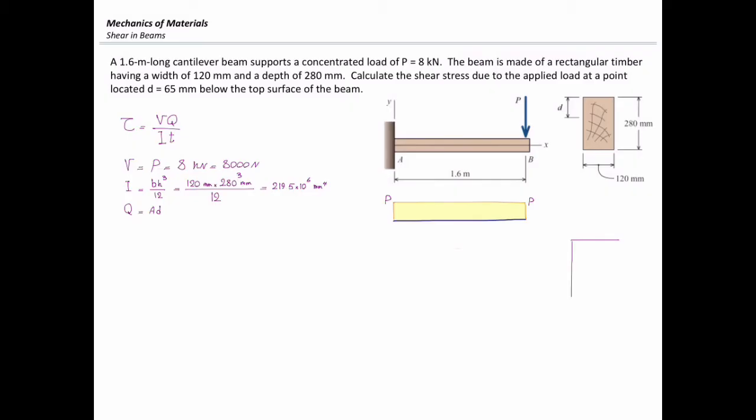So I'm drawing this section again. This is the section that I have. This is the line passing through the axis of this rectangle. The location, the point that I'm interested in determining the value of shear stress, is located 65 mm below the top of this beam. So I need to determine Q for this hatched area.